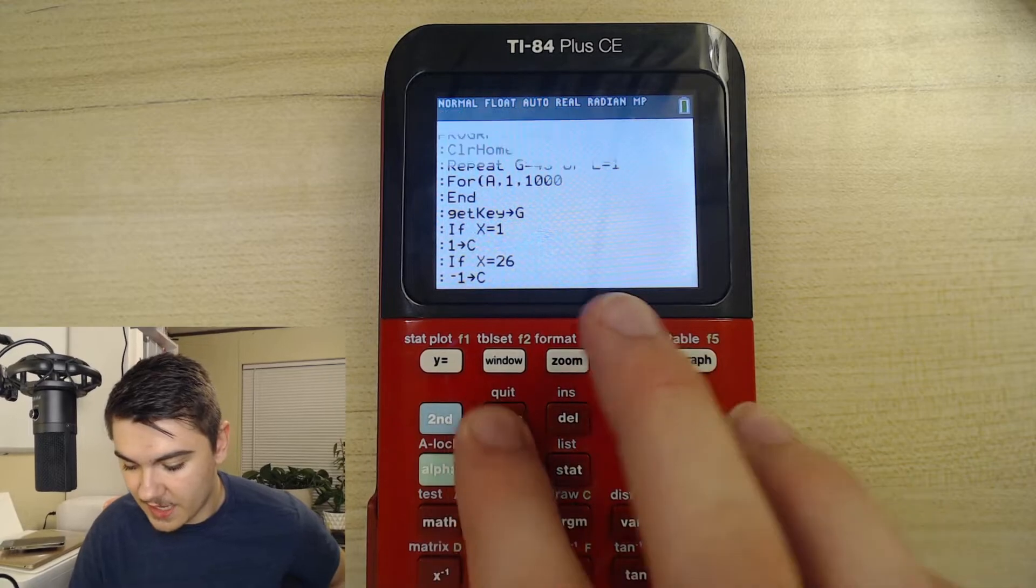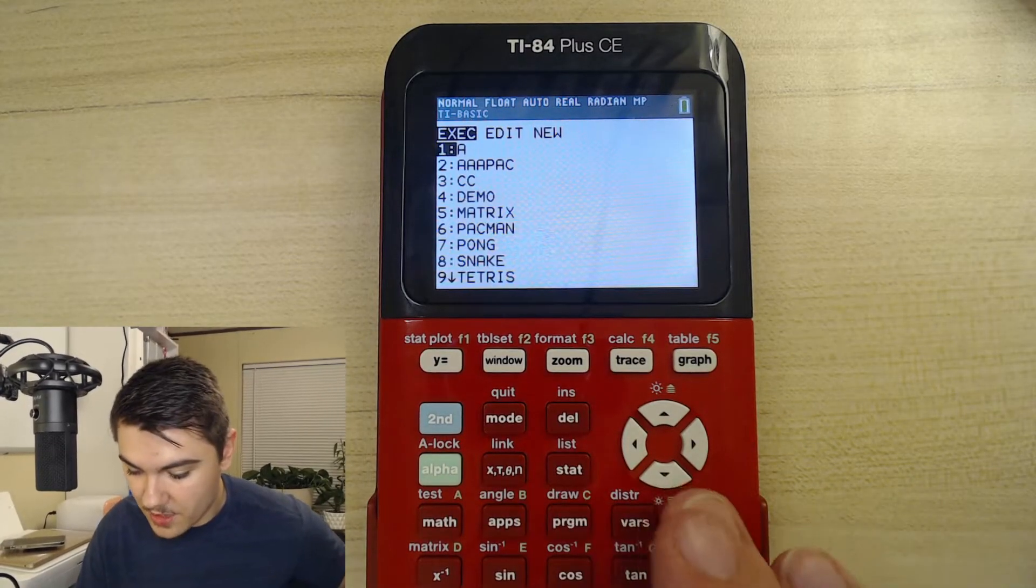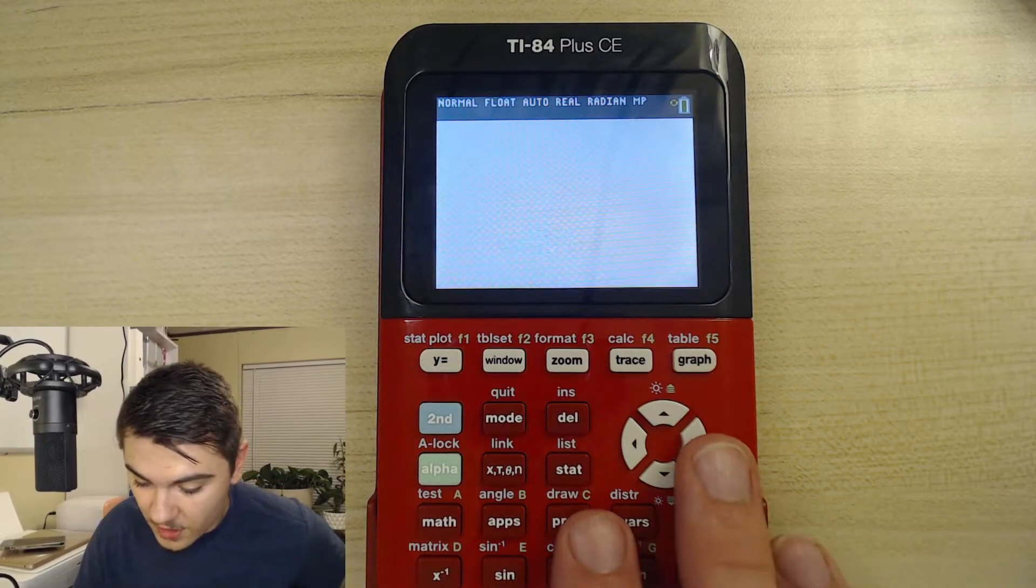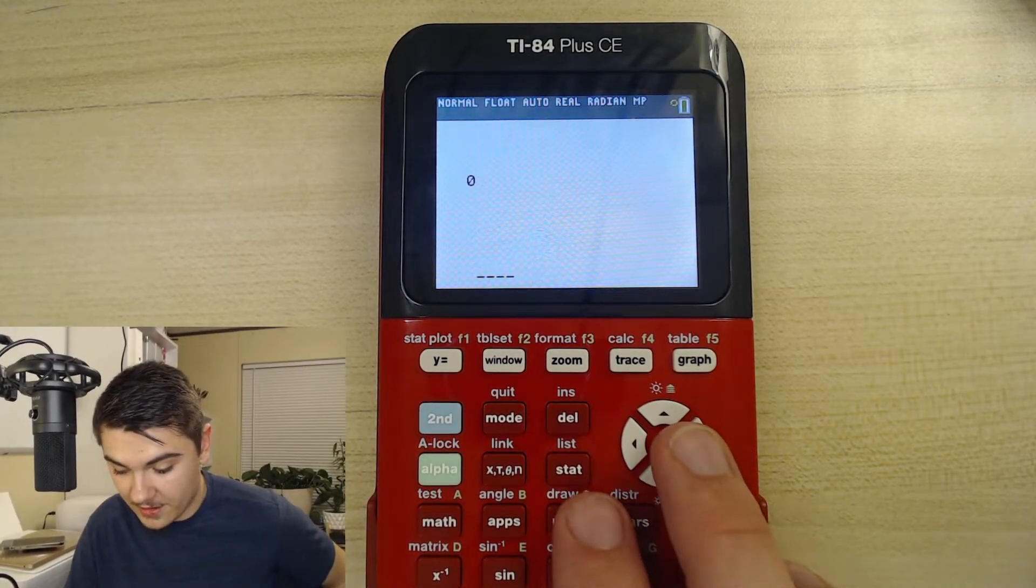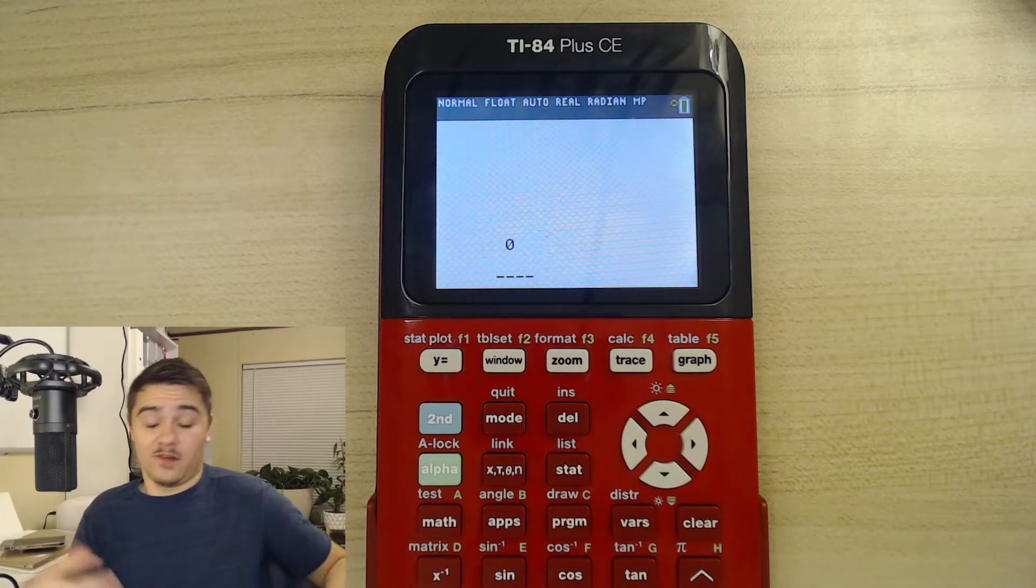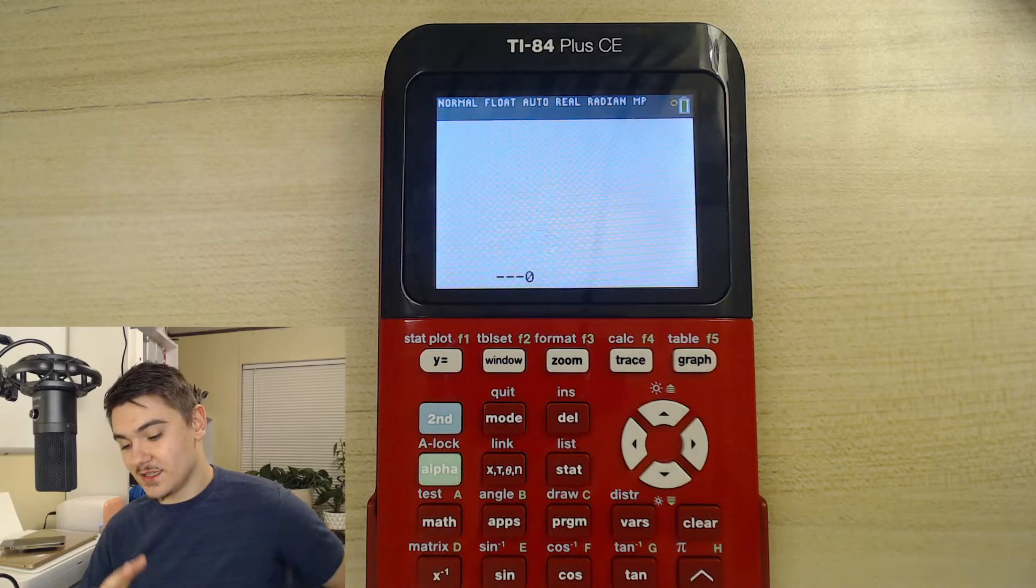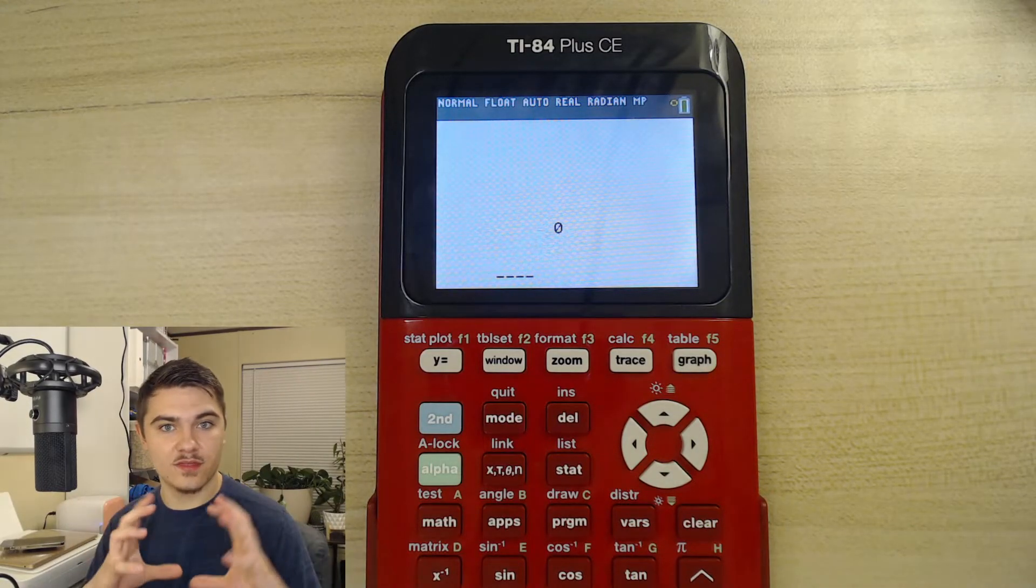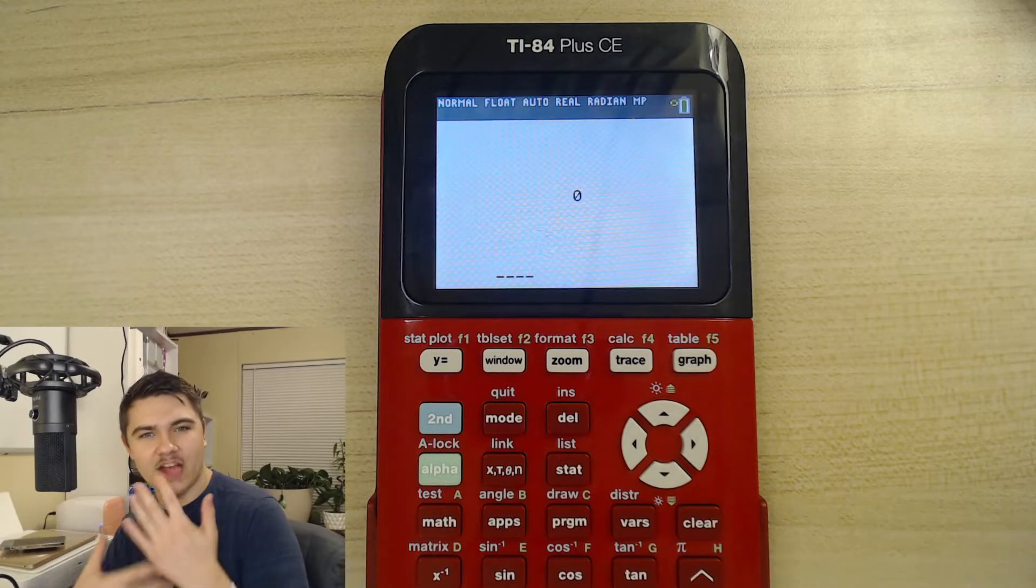So I'm going to press second mode to clear it out. Press program, scroll down to pong, enter. Watch this. It goes super slow in my calculator. And for you guys, it might be normal speed. I don't know. Let me know if you guys edit the number to whatever is the best for you to make the pong game actually workable.